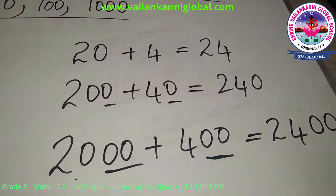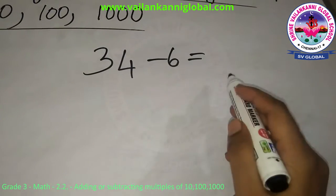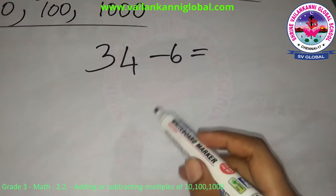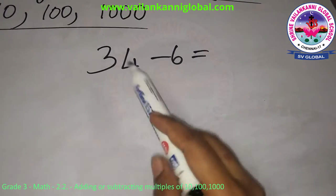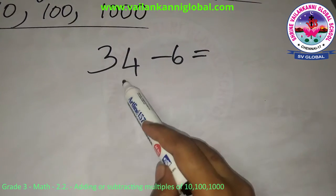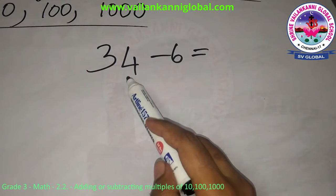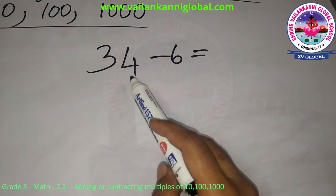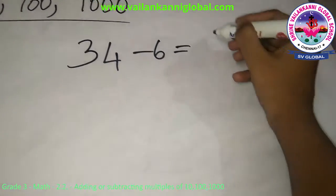Let's see another example. When you see 34 minus 6, we already have learnt mental subtraction. So first subtract 4. So 34 minus 4 will be 30. Now subtract 2 from 30 which is 28.